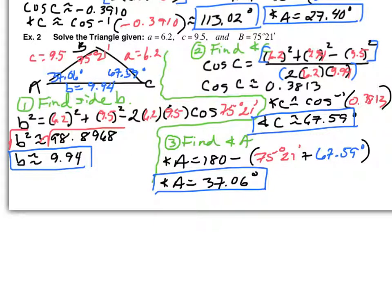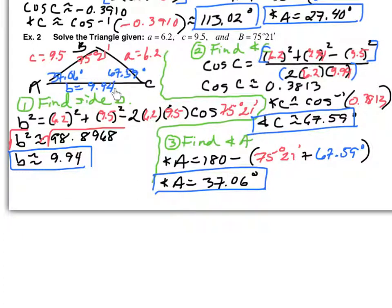Let's talk about how to determine if our answers are reasonable. The smallest side should be across from the smallest angle, and the largest side across from the largest angle. Our smallest angle is 37.06 degrees — is it across from the smallest side? Yes. Our largest angle is 75 degrees 21 minutes — is it across from the largest side? Yes. So our answers seem reasonable.